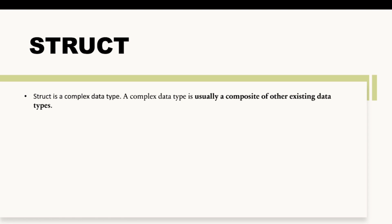But if we want to store the details of a student, a student can have multiple properties — for example, a roll number, a name, marks, and other different things associated with a single student. In cases like these, where we have multiple properties of different data types, we use struct.